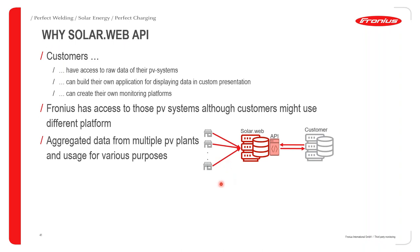Why SolarWeb API? As a customer, you can have access to all raw data from your PV systems. You can build your own application for displaying data in a customized presentation, and create your own monitoring platforms. For example, if you have over 100 systems installed and want to filter data differently than SolarWeb provides, the SolarWeb API becomes the tool you need.